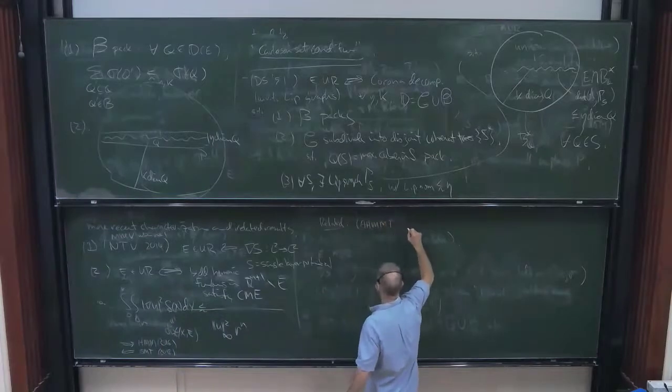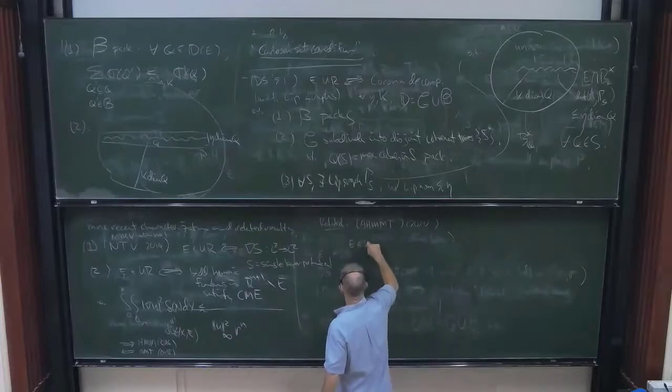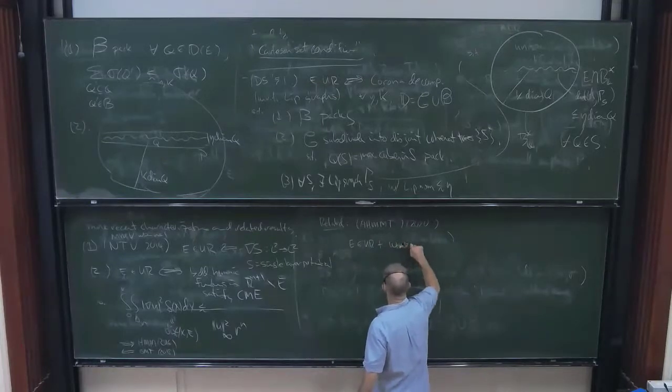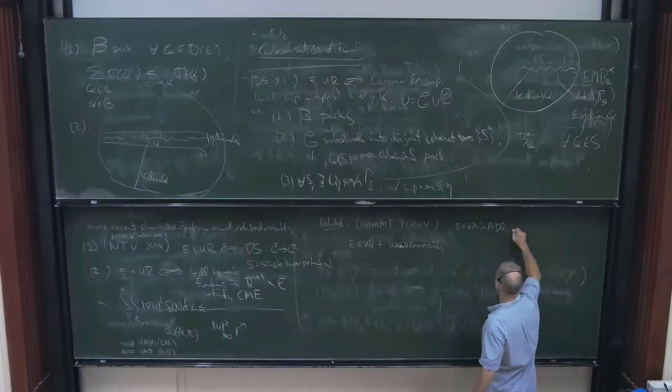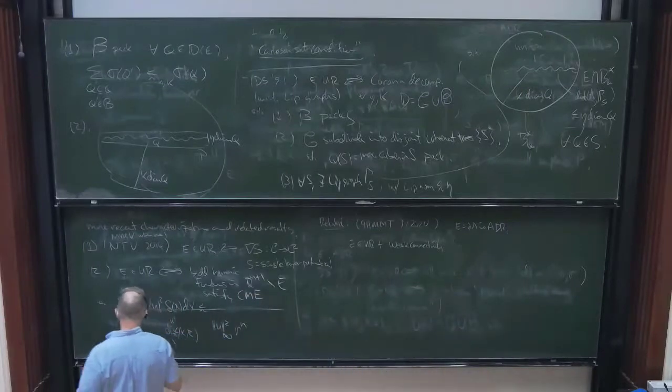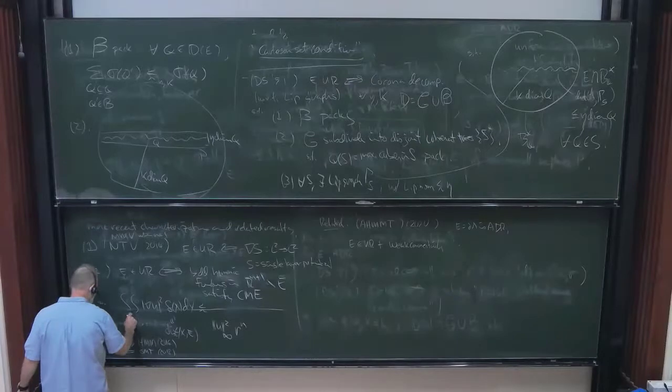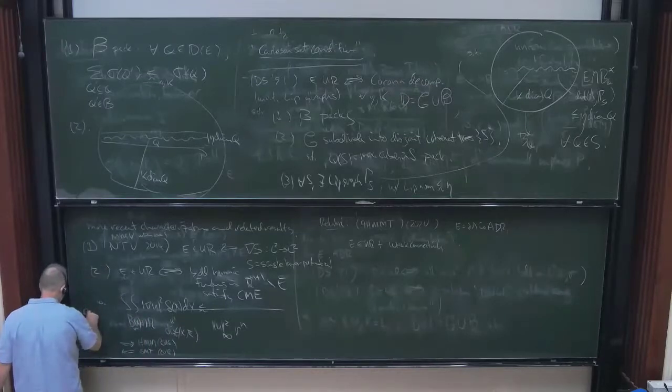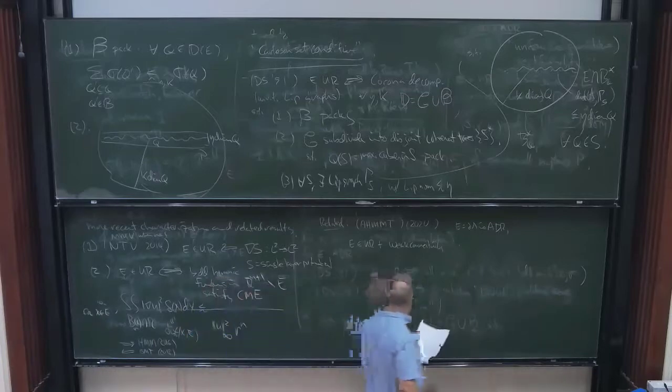So one direction of this, this direction is joint work with Chima Martel and Svitlana Mayboroda that's 2016 in the opposite direction is due to Garnett, Mourgoglou and Tolsa a couple of years later. And then let me mention one related thing which is something that just appeared recently fairly recently joint with Jonah Azzam, Chima Martel and Javi Tolsa, which is that E is UR plus weak connectivity I won't take time to get into that oh this is assuming not just ADR but also yes ball intersected with oh I wrote it wrong yeah yeah yeah yeah yeah yeah yeah sorry sorry sorry sorry sorry sorry sorry yes and x with x for x in in E yeah yeah thanks yeah.